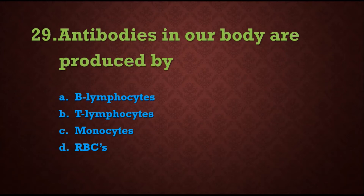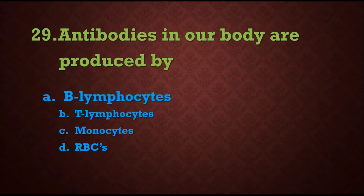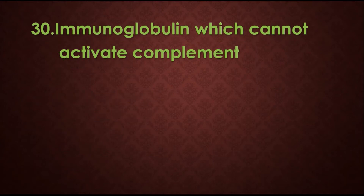Antibodies come from plasma cells, and those plasma cells are derived from B lymphocytes. So the answer is A) B lymphocytes.